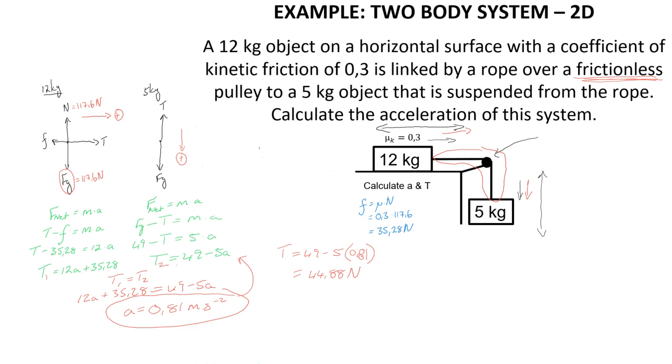So once again, this type of question may seem more complicated because it appears to act in two dimensions, but what we need to remember here is that because these two objects are linked by a rope that runs over a frictionless pulley, the motion of one object still means that the motion of the other object will be the same and therefore these objects will still have the same acceleration and the tension in that rope that links the two of them will still be the same and therefore we can treat this as we would any other two-body system.